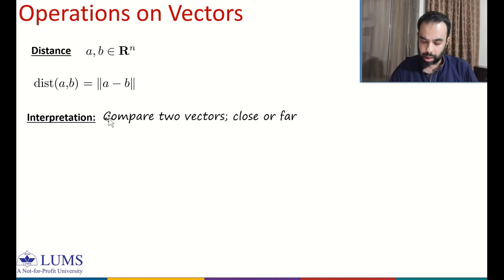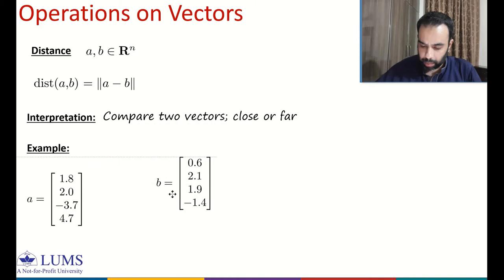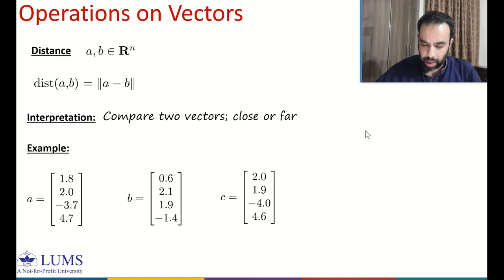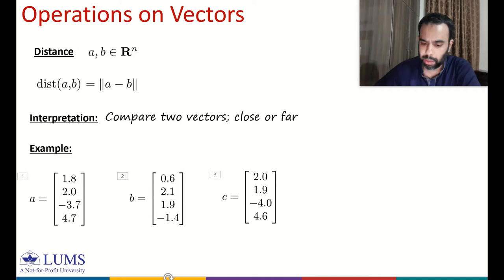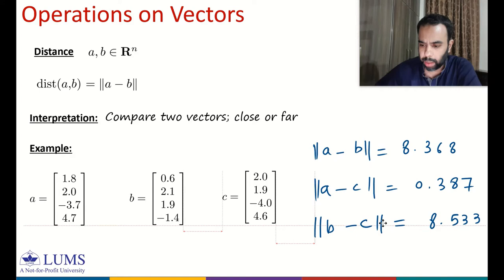Let me illustrate this with an example. We take three vectors A, B, and C, and we are interested in finding the distance from A to B, B to C, and C to A. The distance from A to B is norm of A minus B, equal to 8.368. The distance from A to C is norm of A minus C, equal to 0.387. The distance from B to C is norm of B minus C, equal to 8.533. Based on these distances, we can say A is closer to C than it is to B.